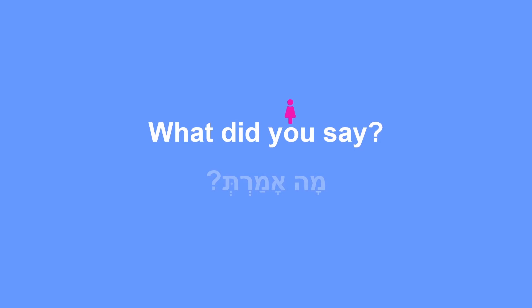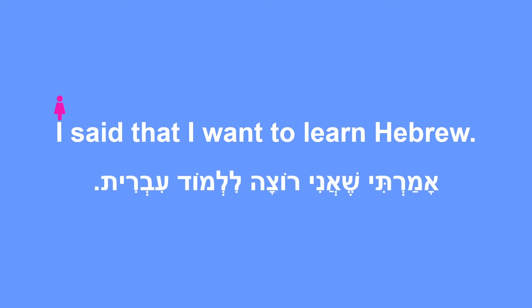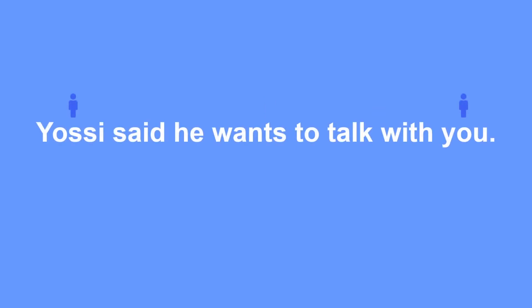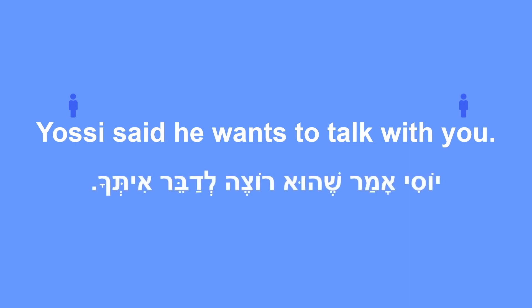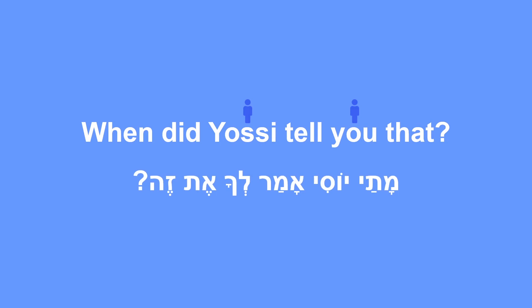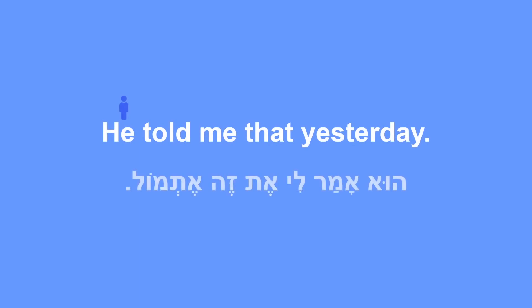What did you say? — מה אמרת? I said that I want to learn Hebrew — אמרתי שאני רוצה ללמוד עברית. What did Yossi tell you? — מה יוסי אמר לך? Yossi said he wants to talk with you — יוסי אמר שהוא רוצה לדבר איתך. When did Yossi tell you that? — מתי יוסי אמר לך את זה? He told me that yesterday — הוא אמר לי את זה אתמול.